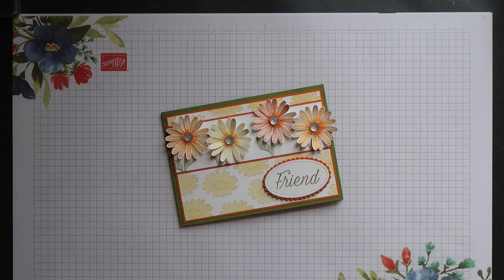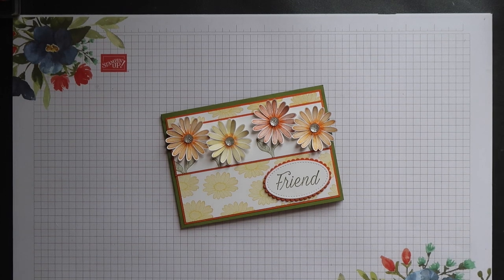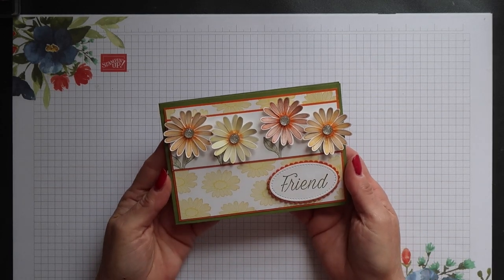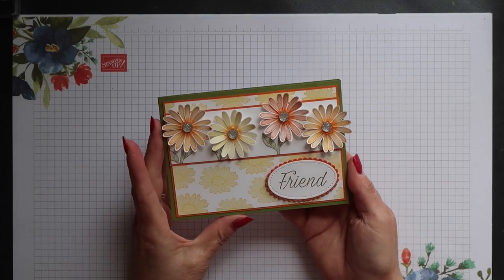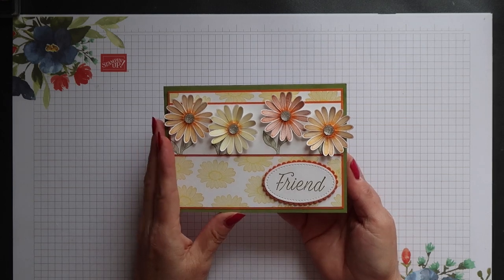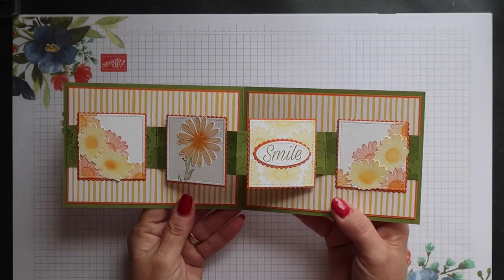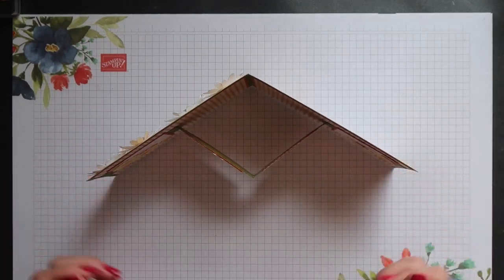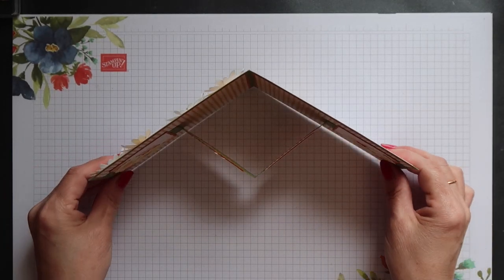Our chosen stamp set this month is Daisy Lane. My project for this month's collaboration is a pop-up panel card. I've used several of the images from the Daisy Lane stamp set. When you open your card, you see four panels, the middle two of which are popped up.